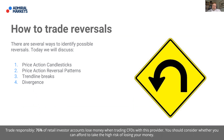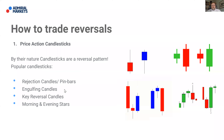When it comes to trading reversals, there are many ways to identify possible reversals. Today I'm going to share four ways of identifying reversals and how to trade them: price action candlesticks, price action reversal patterns, trend line breaks, and divergence. Some of you may be aware of one or two of these, some may be aware of all of them — we'll go through each and hopefully it will build a picture of how to identify and trade reversals.